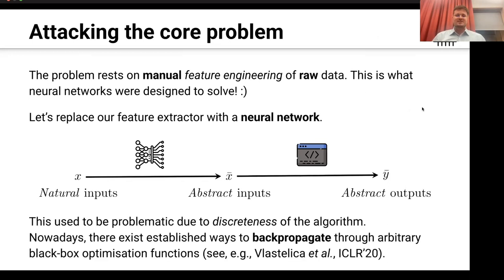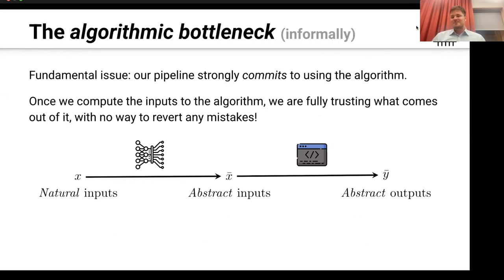So let's try this: we take the same pipeline as before, but replace the human feature extractor with a neural network encoder. This neural network maps your raw data from the natural input space directly into the space of abstract inputs the algorithm expects. Then you execute the algorithm to get your outputs and train this encoder using gradient descent over specific input-output pairs. You might think this is problematic because not all algorithms are easily amenable to backpropagation — they might not be differentiable or may be heavily discrete. However, there exist very nice established ways to perform backprop through arbitrary black-box optimization functions, such as the black-box backprop work by Marin Vlastelitsa and others, which was an ICLR spotlight a few years ago.